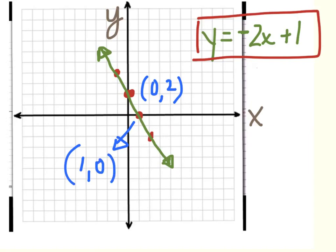Another thing you're going to be expected to label is the equation of the line, written right on the line itself. So I'm going to come over here and label right on the line: y equals negative 2x plus 1. So right on the line, I label the equation.